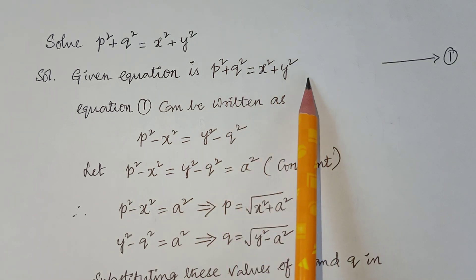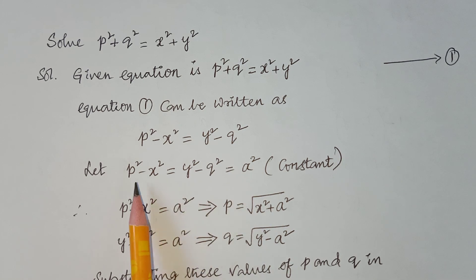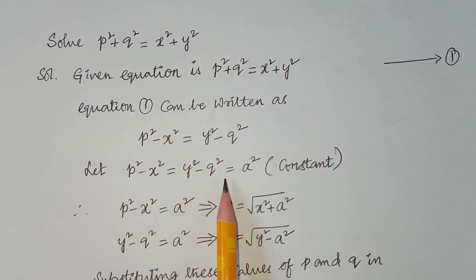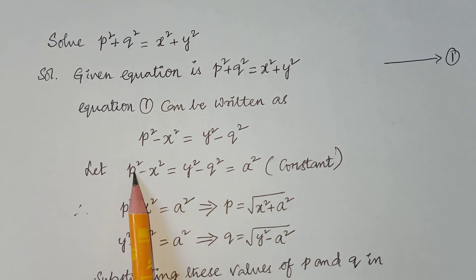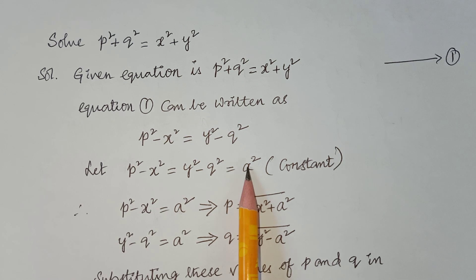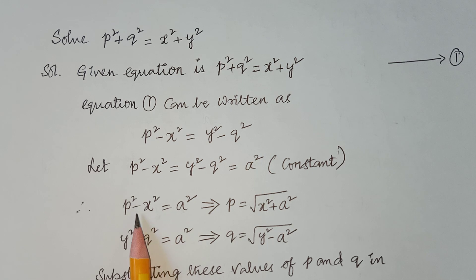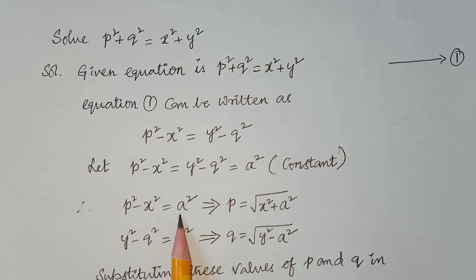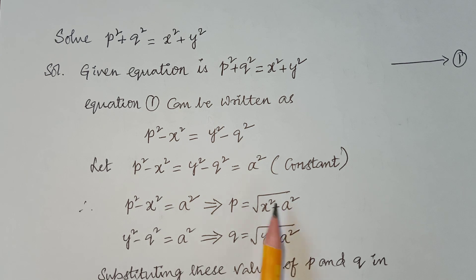We have separated p, x on one side and q, y on another side. Now let p² − x² = y² − q² = a². We use a² here because the degree of p is two (it appears as p²), so to avoid square roots we assume the constant as a². If the degree of p were one, we would assume the constant as just a.